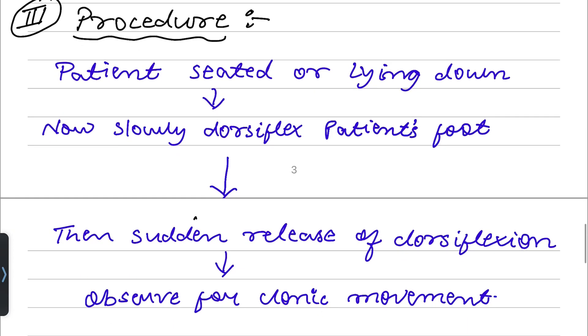Now we will see procedure. Procedure. How do you do? What is the technique? Patient will sit down or lie down. Then we will slowly dorsiflex, slowly dorsiflex. Dorsiflex patient and we will suddenly, sudden release of dorsiflexion.